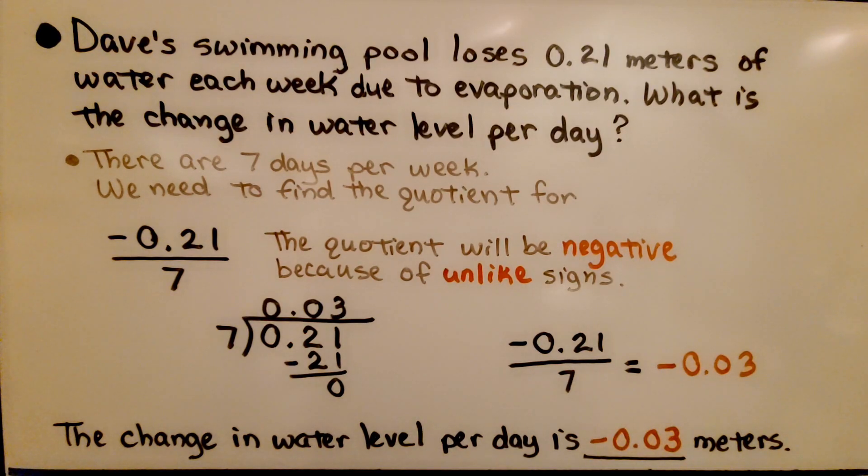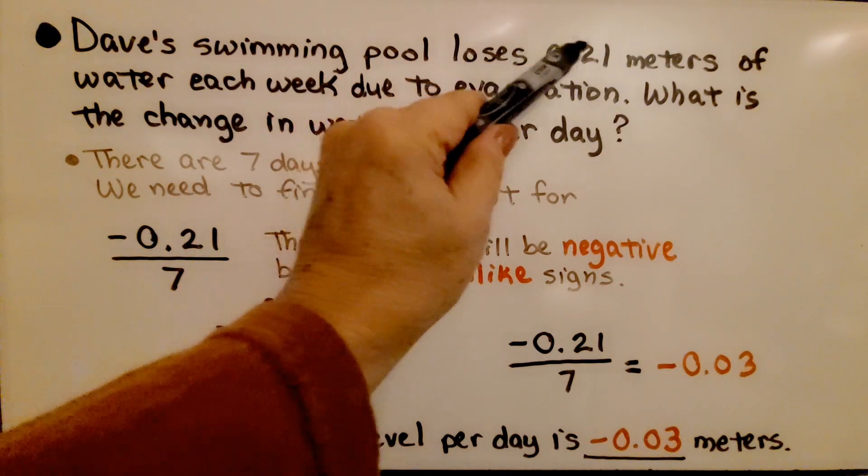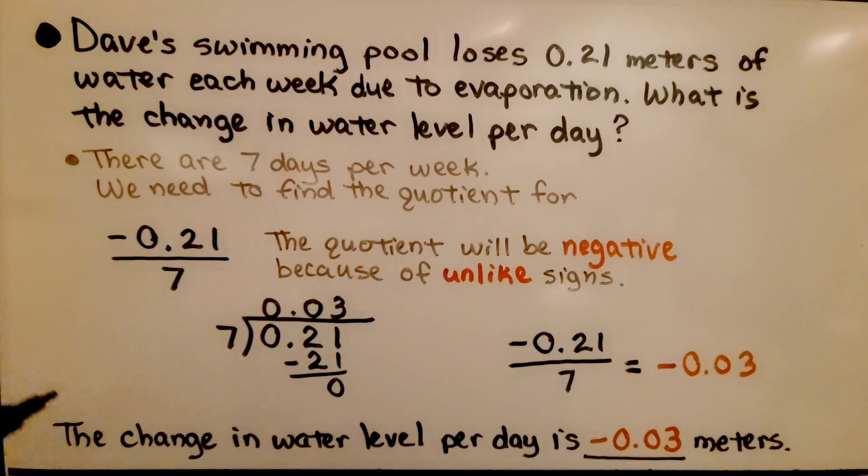Dave's swimming pool loses 0.21 meters of water each week due to evaporation. What is the change in water level per day? There are 7 days per week. We need to find the quotient for negative 0.21 divided by 7. The quotient will be negative because of unlike signs.